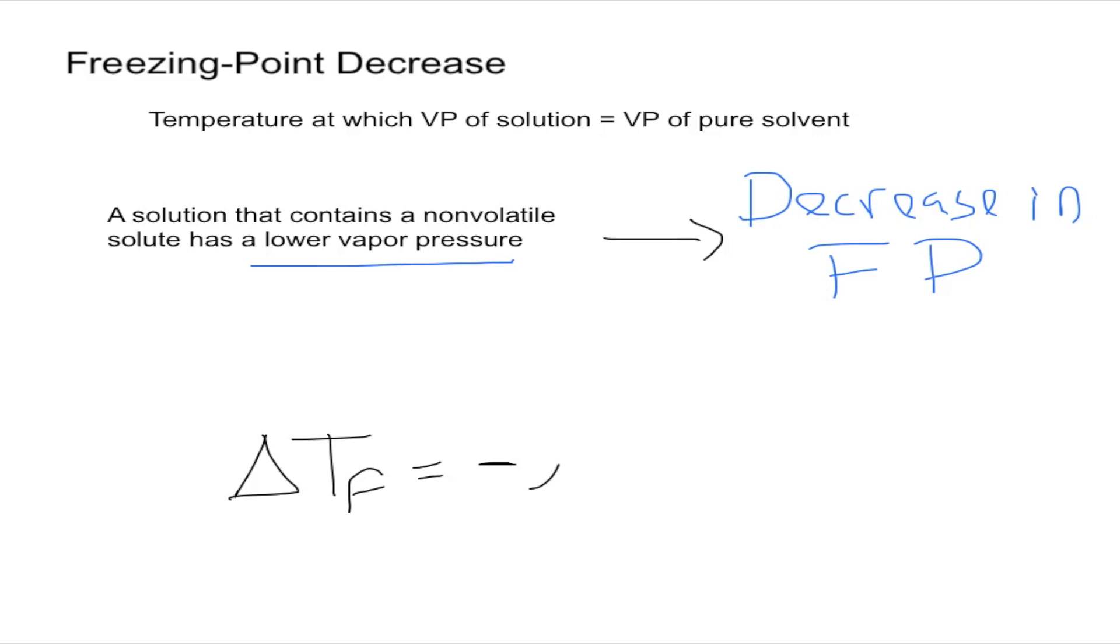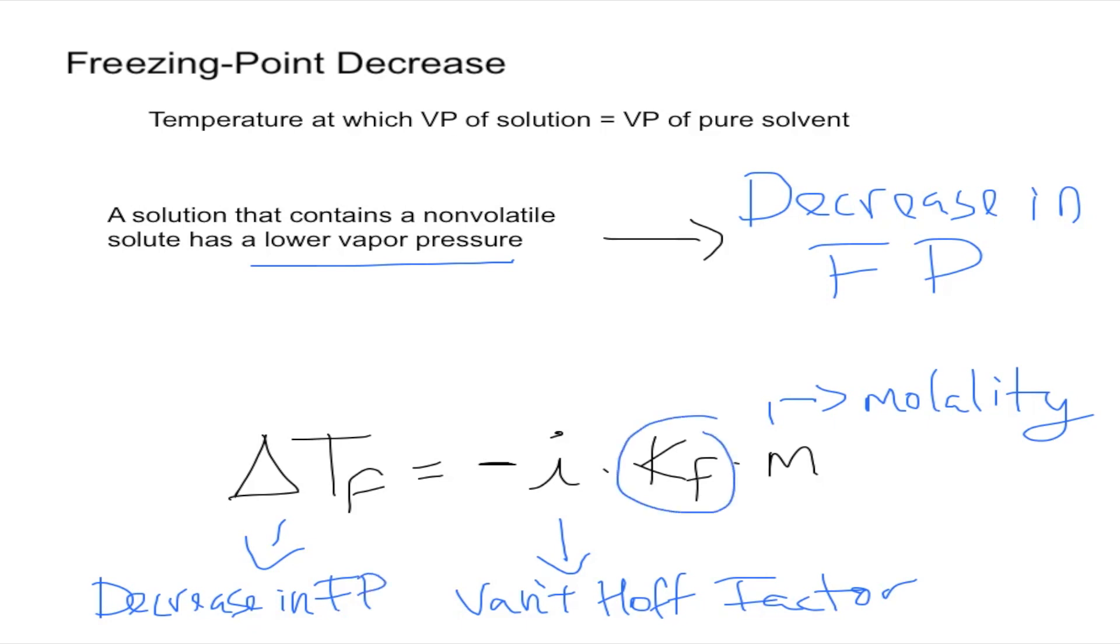So that i times the K of F and then m. So this is molality, molality like in the previous case. This is our van't Hoff factor. This is the decrease in freezing point. This is the constant we're going to get like in the previous case. It's going to be in Celsius times kilograms over moles.